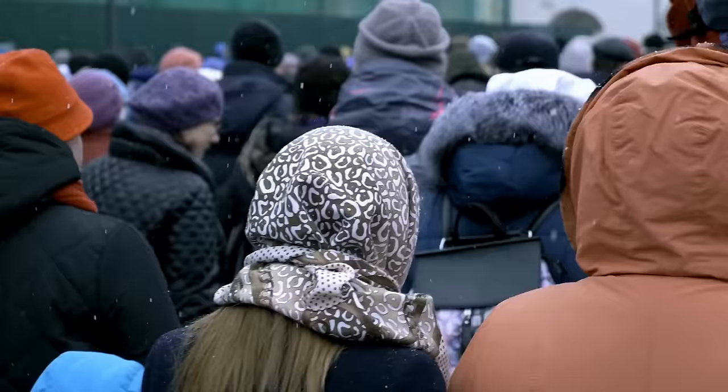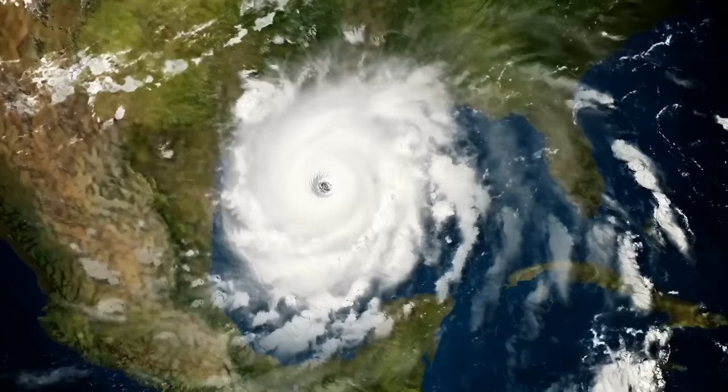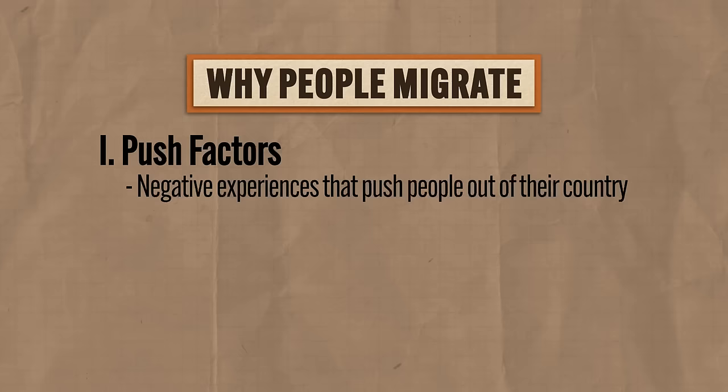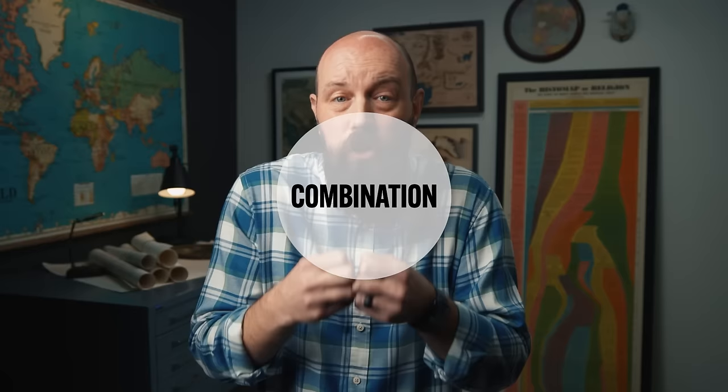Push factors are negative experiences that push people out of their country — like war, persecution, famine, or natural disaster. For example, Hurricane Katrina in 2005 sent around a million Louisiana residents seeking shelter in other states. Pull factors are positive factors that attract migrants to a new place, like new job opportunities or seeking freedom under another country's more stable government. When people decide to migrate, they're usually experiencing a combination of push and pull factors — they rarely occur in isolation.